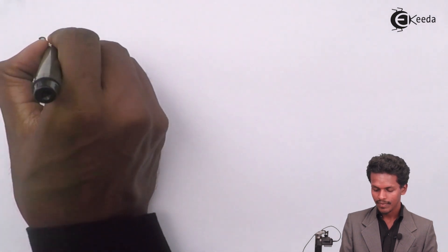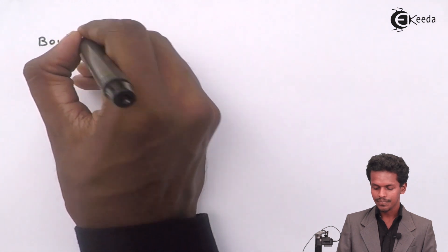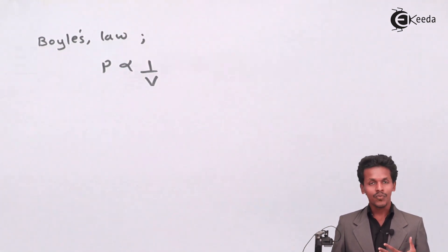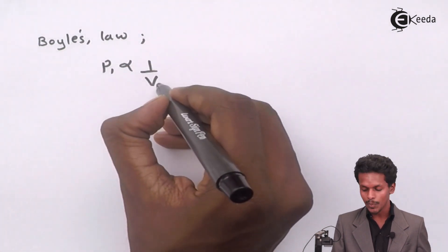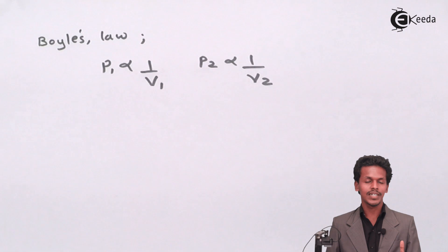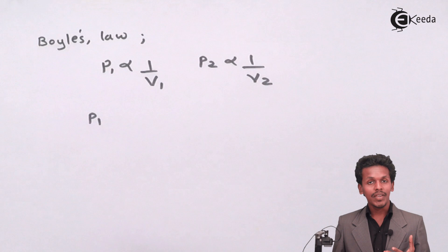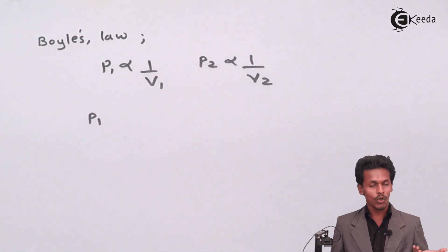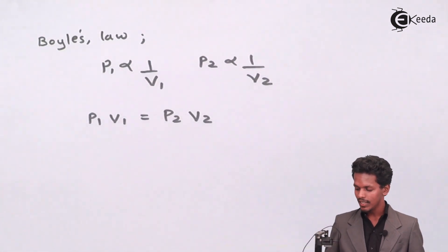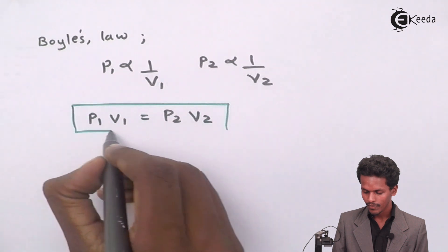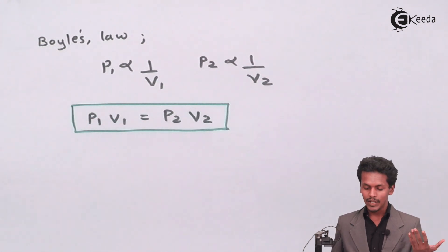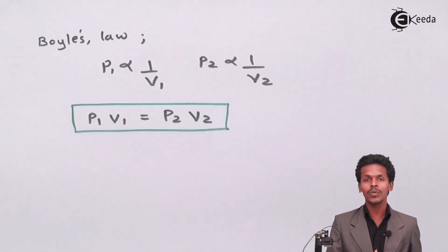Boyle's Law states that pressure is inversely proportional to volume. We have derived this previously. So we can state that P1 is inversely proportional to V1 and P2 is inversely proportional to V2. Since both conditions occur at constant temperature, we arrive at the formula: P1 × V1 = P2 × V2. On the basis of this formula, we are going to calculate the volume of the gas at the new pressure.